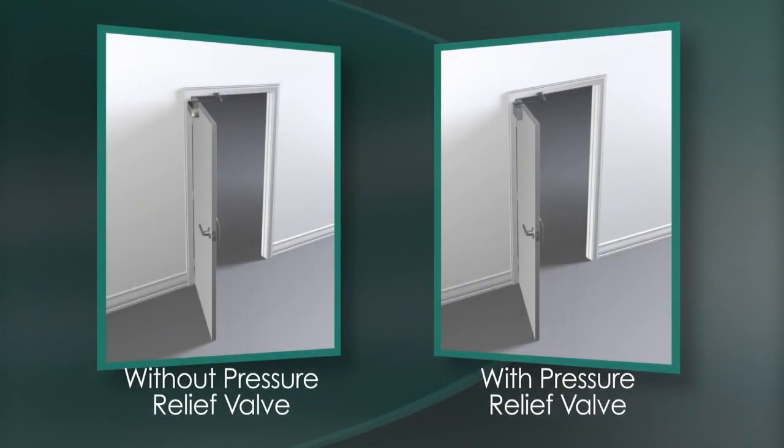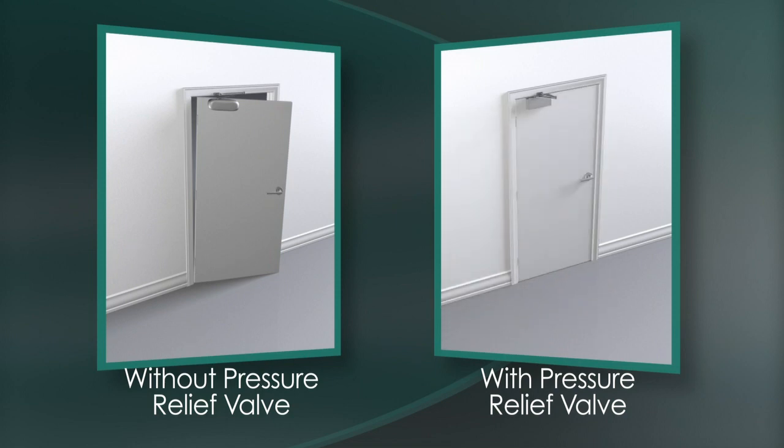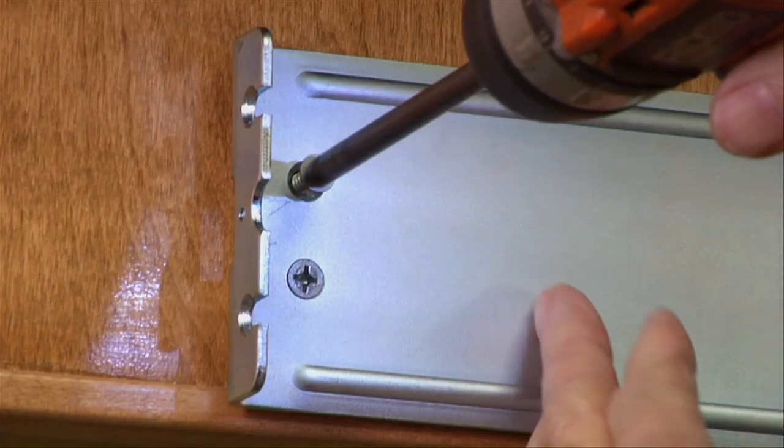By releasing this pressure, the valve acts as a shock absorber, preventing damage to the door closer, the mounting hardware, the frame, or the door itself. Another unique feature for our cast iron closer is an independent mounting bracket.